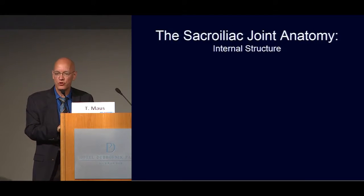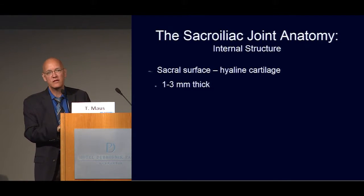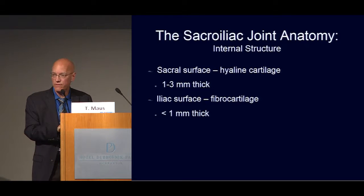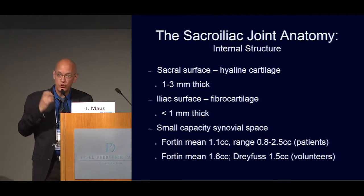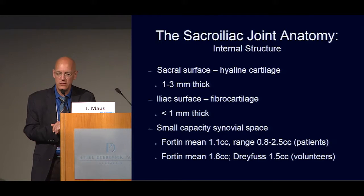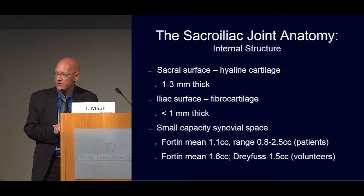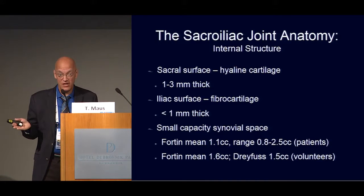Looking at the internal structure of the joint: the sacral surface is covered by hyaline cartilage, relatively thick, whereas the iliac surface is covered only by very thin fibrocartilage. It is a very small capacity joint, as it moves little. Fortin's study of patients with sacroiliac joint pain showed a range of volumes of one to two and a half cc's, and Fortin and Dreyfus agree on about 1.5 cc's for normal volunteers. When looking at studies of sacroiliac joint injections, look at the volume injected — many early studies used six to eight cc's, which was not in the sacroiliac joint.